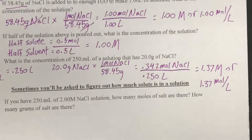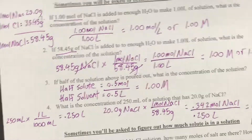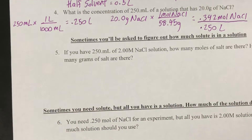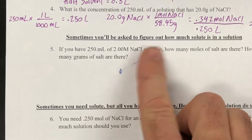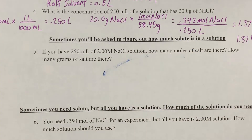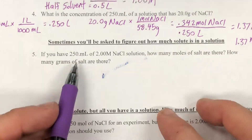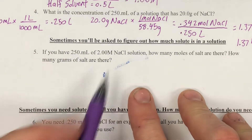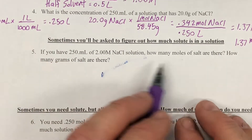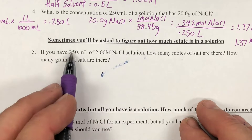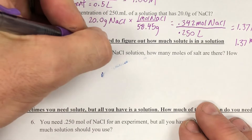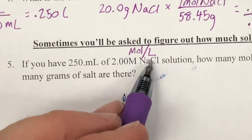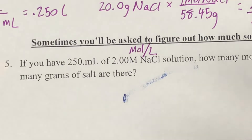Finding concentration is really simple — just put moles on top of liters. Sometimes you'll be asked to figure out how much solute is in a solution, so we're working backwards. We have 250 milliliters — which we already know is 0.250 liters — and a 2-molar NaCl solution. How many moles of salt are in there? Remember that big M is moles per liter, so there are two units there.